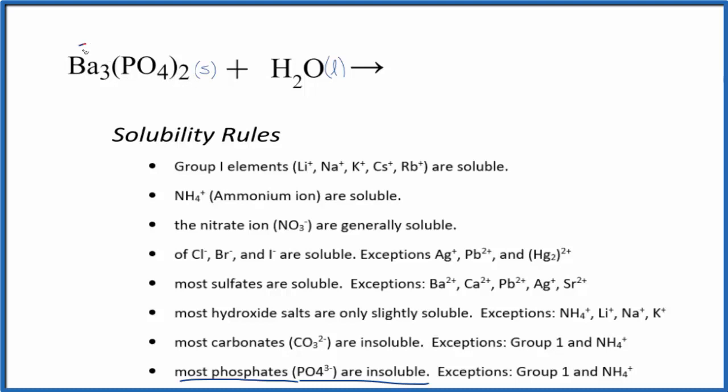Barium's in group 2 that would be 2 plus and the phosphate ion, the whole phosphate ion is 3 minus. So we'll have three barium ions and two of the phosphate ions. And since these are dissolved in water let's put AQ for aqueous after them. Aqueous means dissolved in water. So this is the equation for the very small amount of barium phosphate that would dissolve in water.